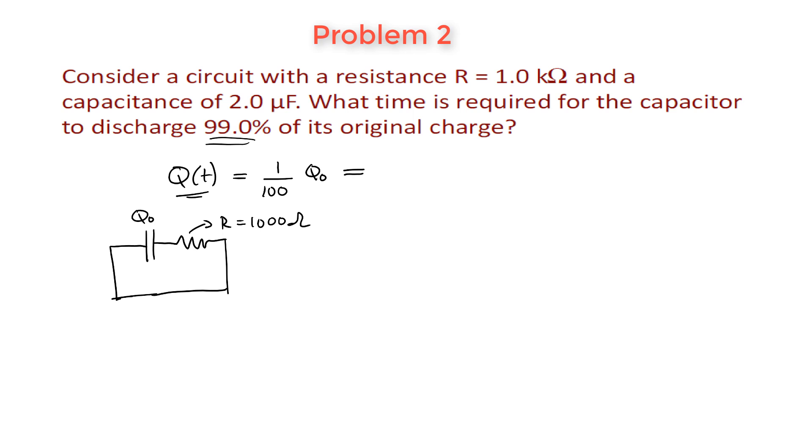So for a simple discharging circuit like the one we have here, the charge as a function of time is simply equal to the initial charge, exponential of minus T divided by our time constant tau. I'll just write it as RC. And that's it. You notice that we have Q0 on both sides. We can cross it out.